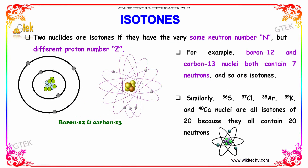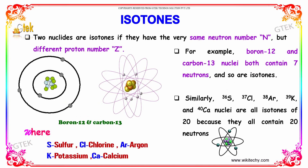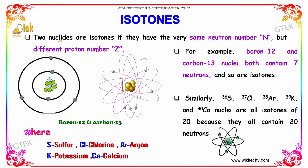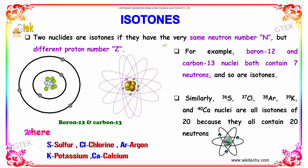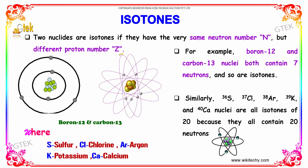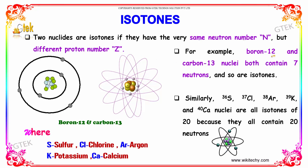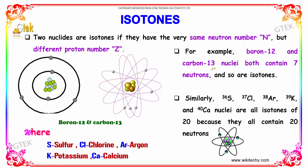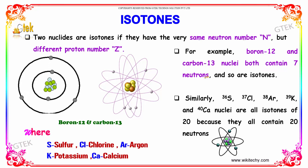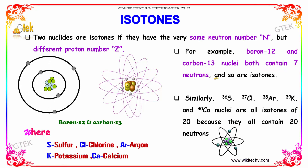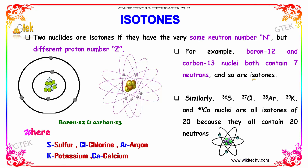What are the isotones? Two nuclei are isotones if they have the same neutron number but different proton numbers. For example, boron-12 and carbon-13 nuclei both contain 7 neutrons, and so they are called isotones.